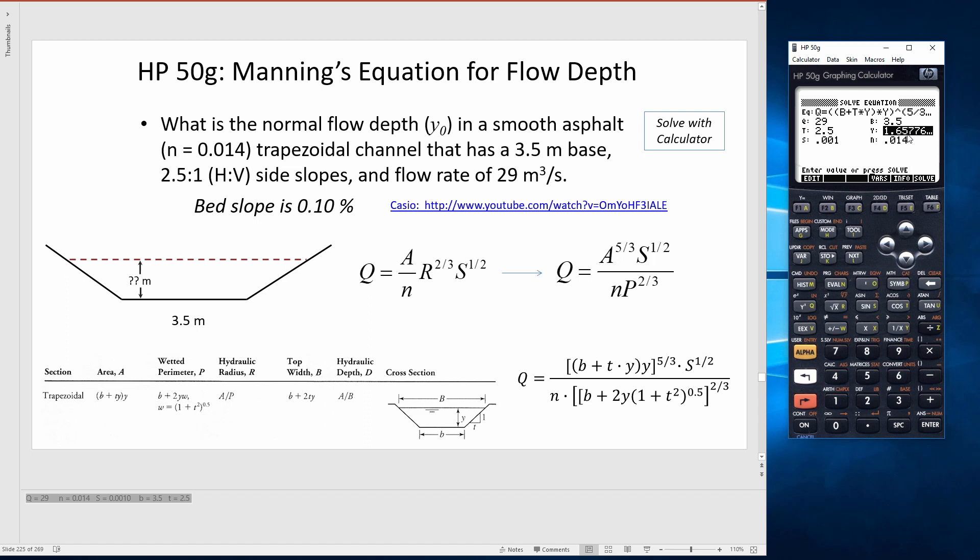The thing that's kind of cool, why I like this is, let's say that you went out and you measured and the depth was actually 1.5 meters. So 1.5 meters is going to correspond to what flow rate? So now I can solve for the unknown. So if it was 1.5 meters, then that's the depth that goes along with 23.55 cubic meters per second.